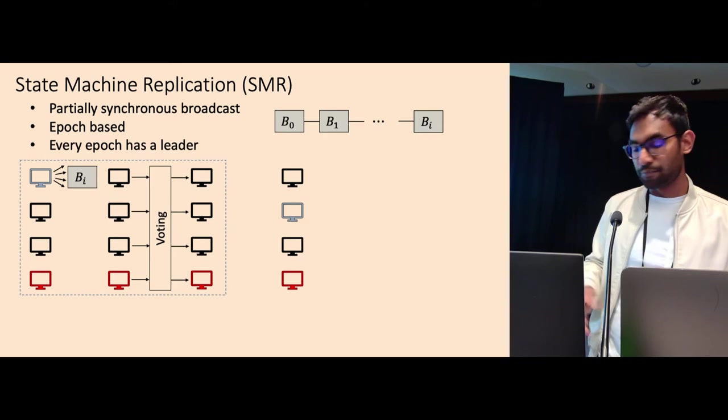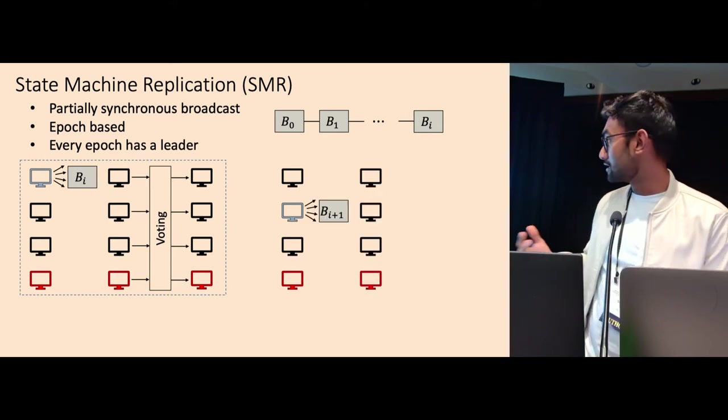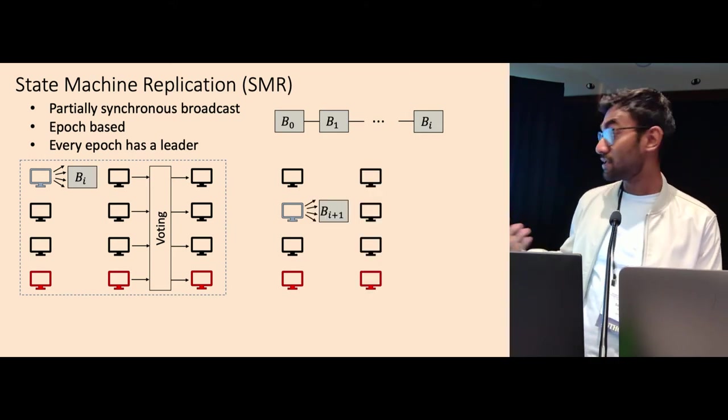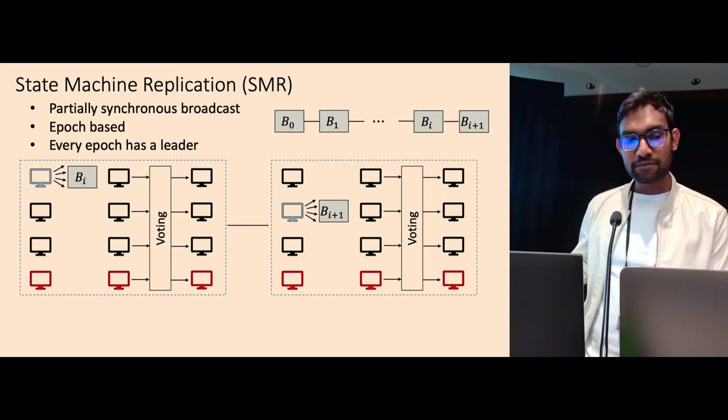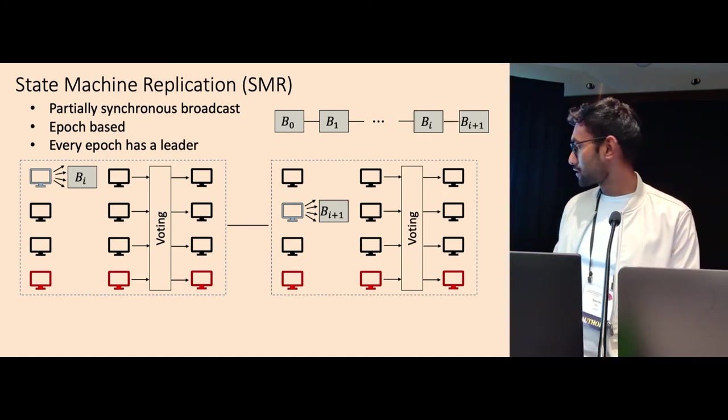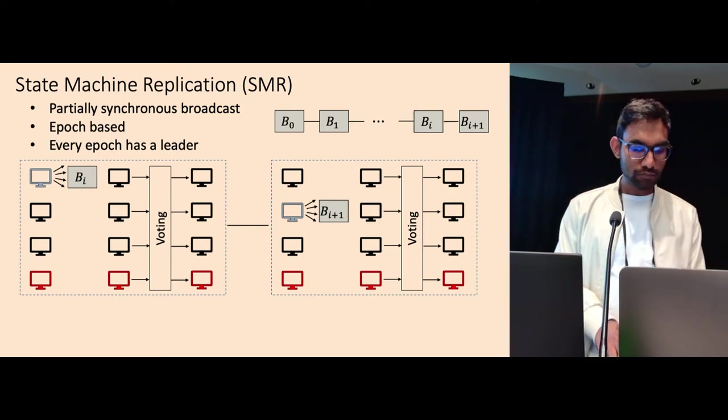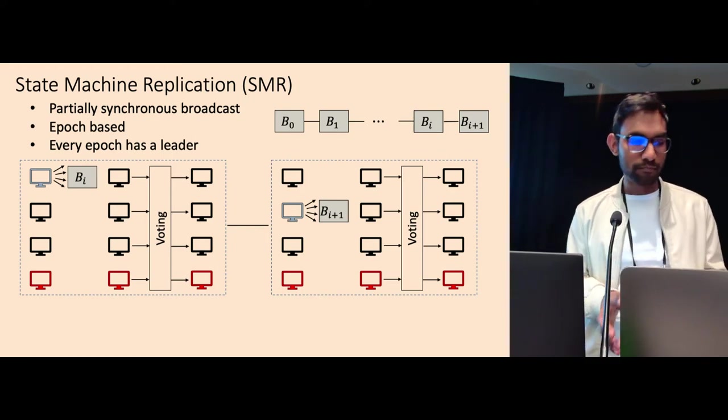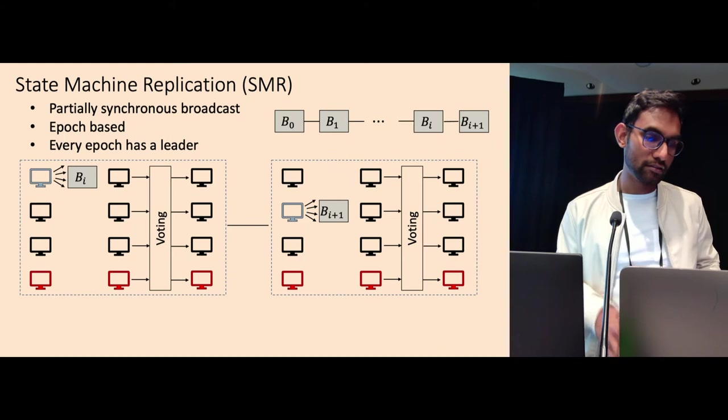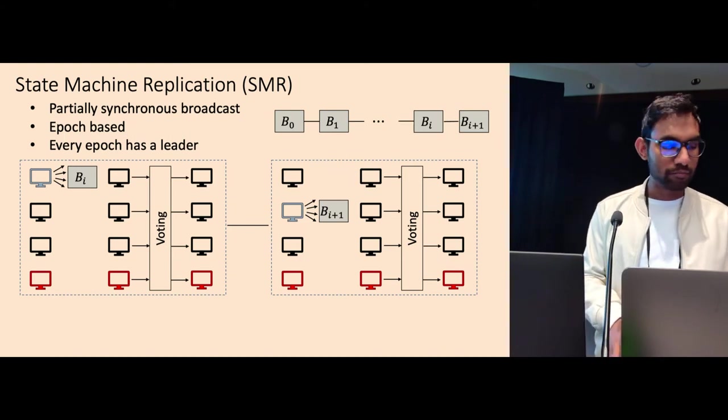Then we move on to the next epoch, where we have a different leader, which will propose a new block, Bi plus one, and then we do the same thing again. We do another round of voting, and then we agree on the new block. So these are the tools we'll use, and we have some other tools as well that we use in our paper.